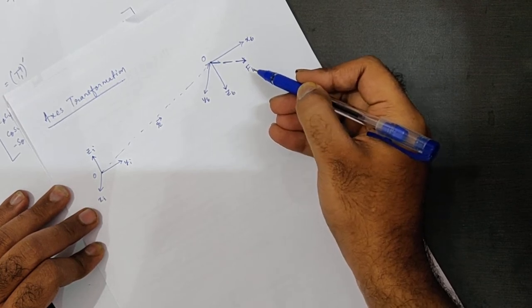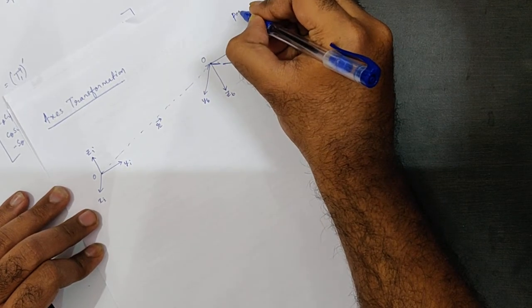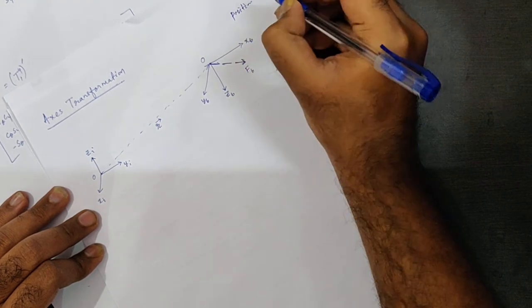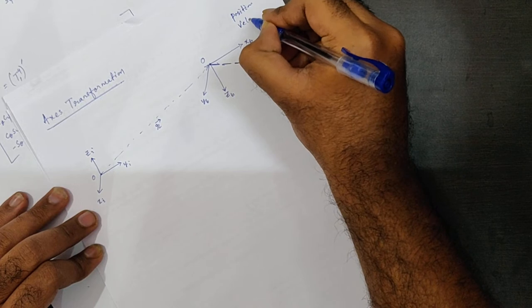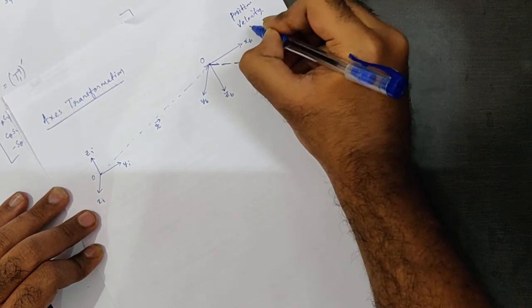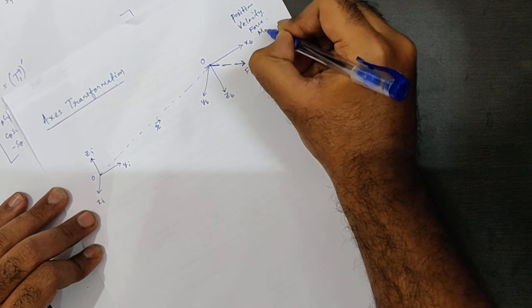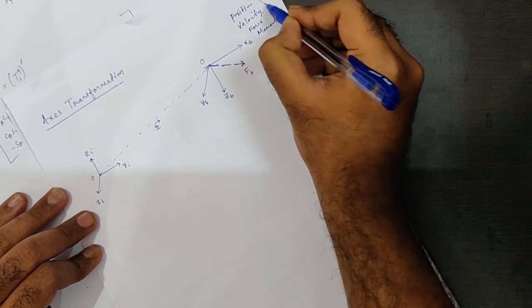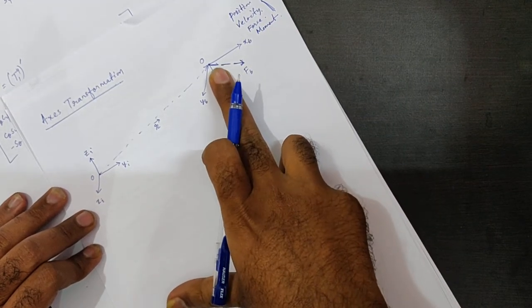It might be any vector. As I said, it might be a position vector of this body, or it might be a velocity vector, or it might be a force vector or moment vector, any such vector with respect to the body frame.